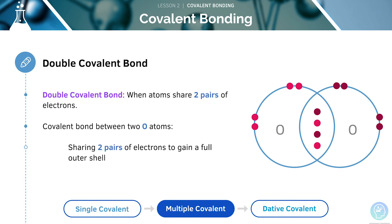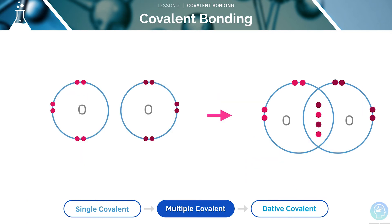This is shown in the diagram here. Both the oxygen atoms need two electrons to gain a full outer shell. The covalent bonding has enabled them to share these electrons, giving each of them a full outer shell.